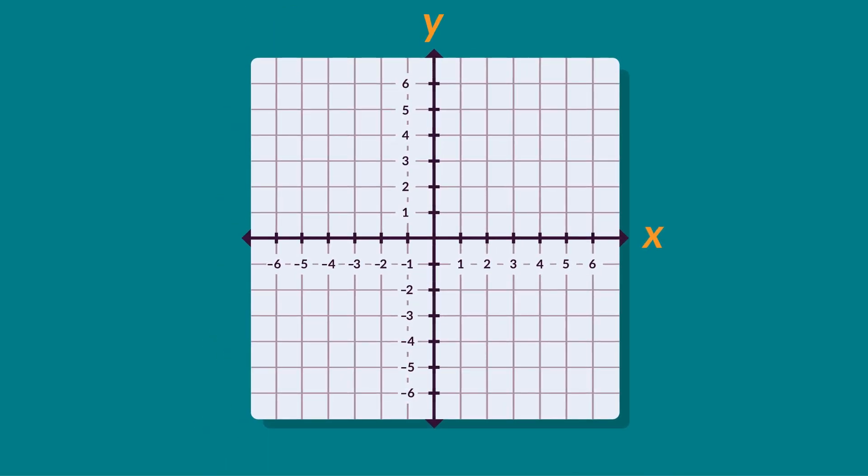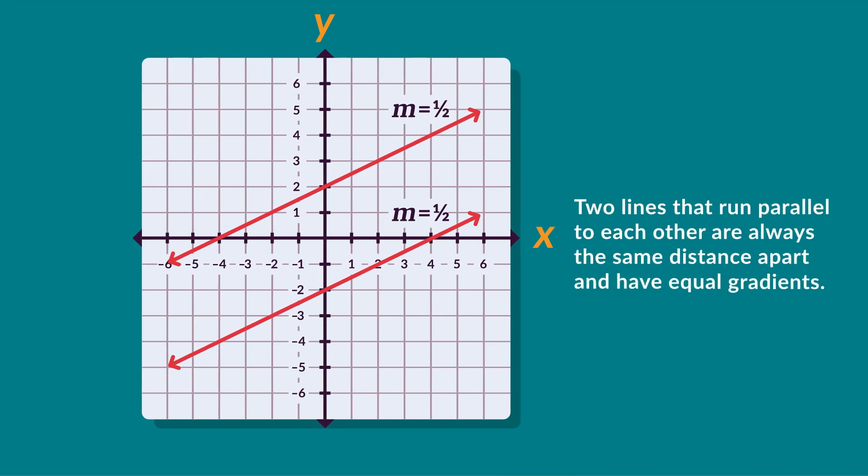Many different lines can have exactly the same gradient. For example, these two lines both have a gradient of a half and are therefore parallel to each other.